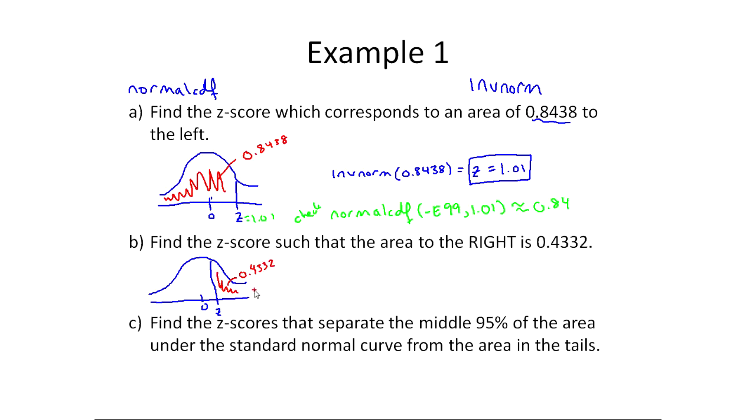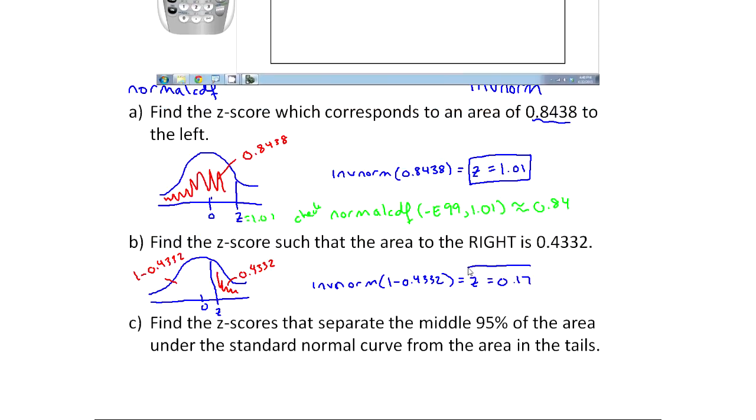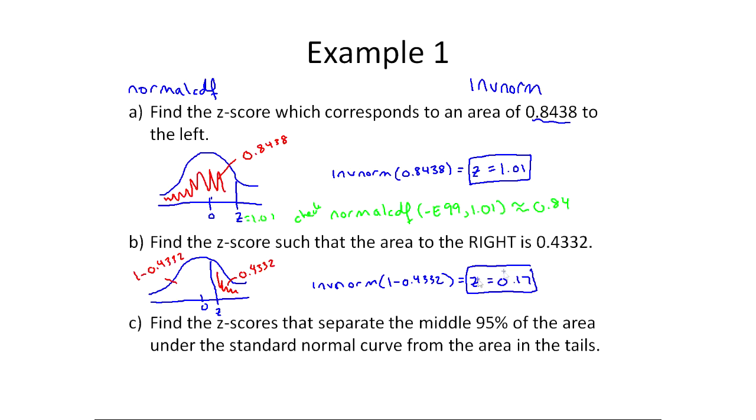The problem is inverse normal wants the area to the left, but the total area under the curve is 1. So what I could actually do to find this area over here is take 1 minus 0.4332. Inverse norm is pretty forgiving, so I could do inverse norm of 1 minus 0.4332, go through the menu on the calculator, and in this case I get z equals 0.17. So a very small z-score, that means this is really close to zero.